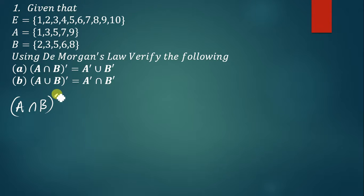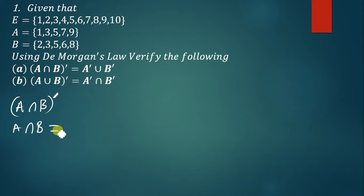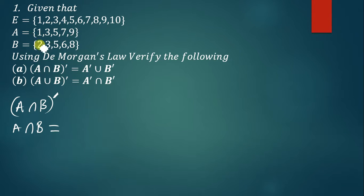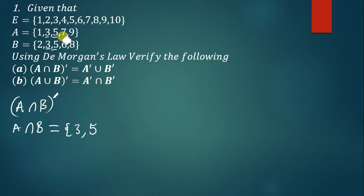To find (A∩B)', the first step is to find what is in the brackets, which is A∩B. A∩B is simply finding the elements that are common in A and B. If we check set A and set B, the elements that are common are 3 — there's a 3 in both — and 5, which is also common. The other elements are not found in both sets, so A∩B = {3, 5}.